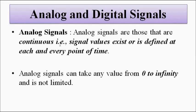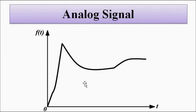Analog signals are continuous. As discussed in the previous video, they are continuous in nature and signal values exist at each and every point of time. These signals can have amplitude between zero and infinity — any value they can take. That is, the amplitude is not limited to certain predefined levels. This is an example of an analog signal: it is continuous, exists at every point in time, and the amplitude is variable.